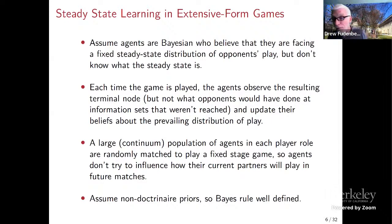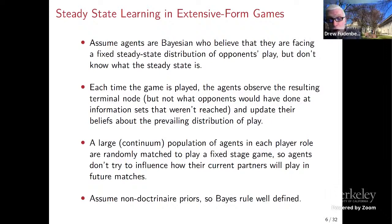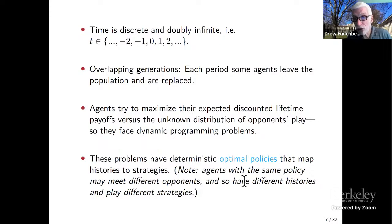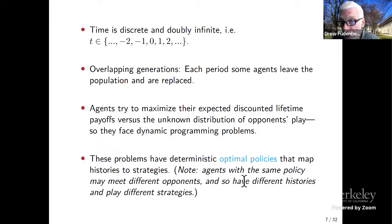It's not just one player one and one player two playing a repeated game — we want players to learn how to play this extensive game and not be involved in a meta or repeated game. So we have a large population of agents in each player role, as in lab experiments, and players are anonymously and randomly matched each period. Because you're never going to see your current partner again, you have no particular reason to change your play now to affect future matches. Our players have non-doctrinaire priors — a prior over the prevailing distribution of opponents' play represented by a smooth density function. Time is discrete and doubly infinite, with an overlapping generations structure where each period some agents leave the population and are replaced. Agents maximize their expected discounted lifetime payoff against the unknown distribution of opponents' play, so they face dynamic programming problems.